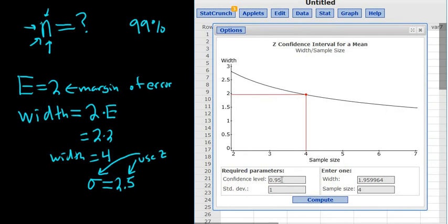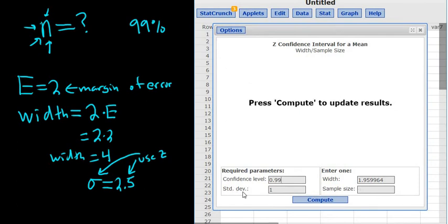Then you have this funny looking chart. So the level was 99. They gave us the standard deviation. So we have to change that to 2.5. And then it looks like the width here is going to be 4. So everything looks good. We've got our confidence level. We have our standard deviation. We have our width. You click Compute.